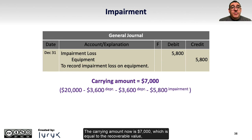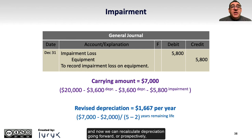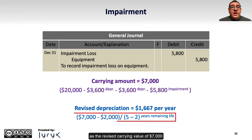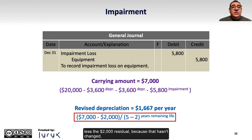The carrying amount now is $7,000, which is equal to the recoverable value. Now we can recalculate depreciation going forward, or prospectively, as the revised carrying value of $7,000, less the $2,000 residual — because that hasn't changed — divided by the 3-year remaining life, to end up with $1,667 per year in depreciation.